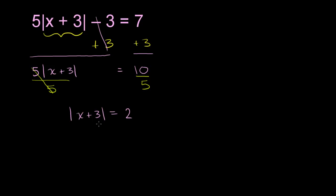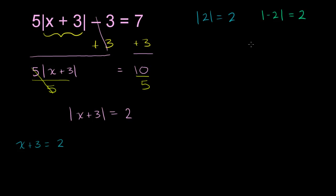We've simplified the equation quite a bit. Now we just need to think through it. If the absolute value of something is 2, what does that mean? We know that the absolute value of 2 is equal to 2, so maybe x plus 3 is equal to 2. But we also know that the absolute value of negative 2 is also equal to 2, so maybe x plus 3 is equal to negative 2.